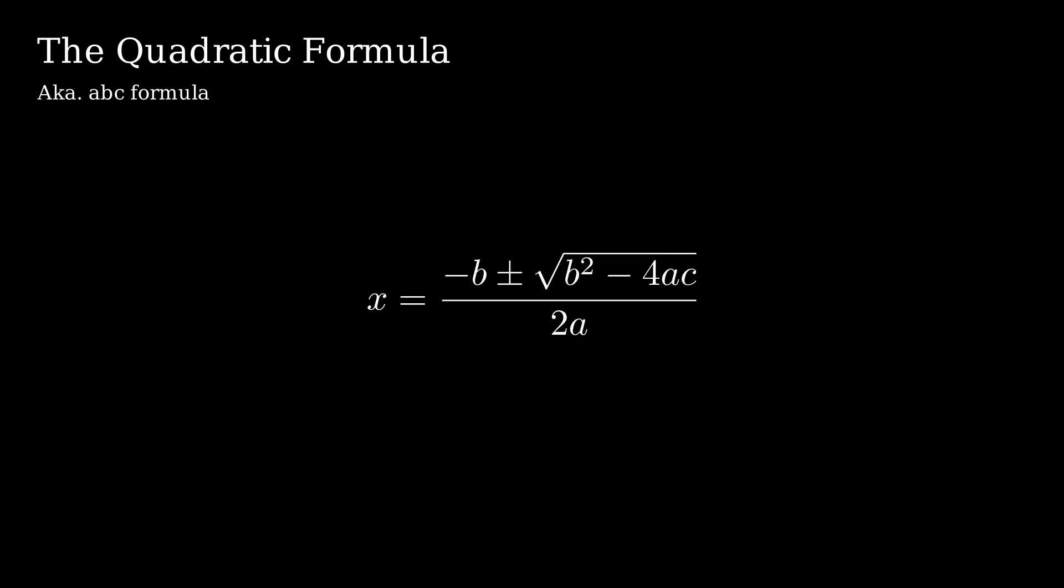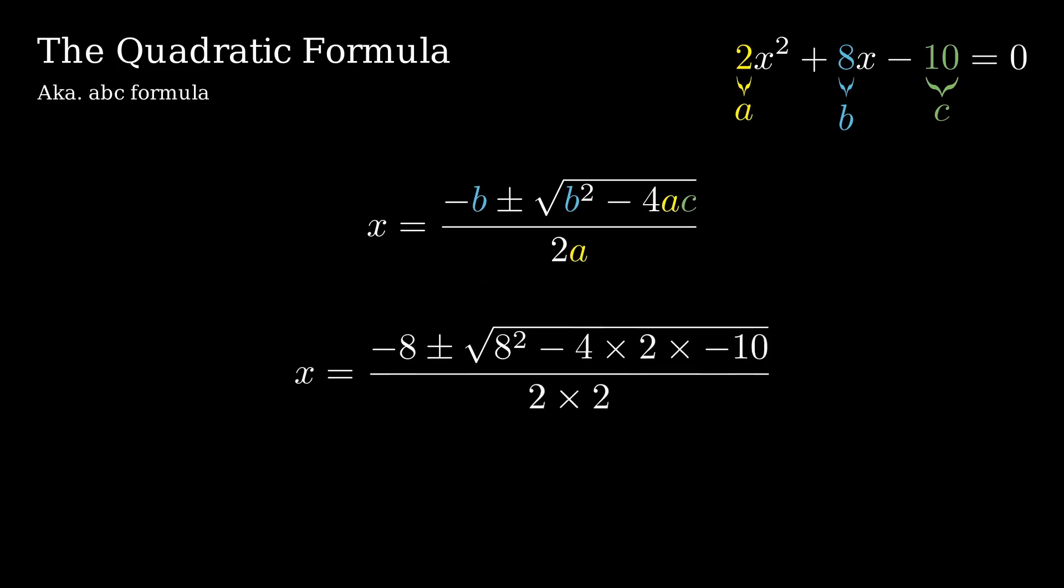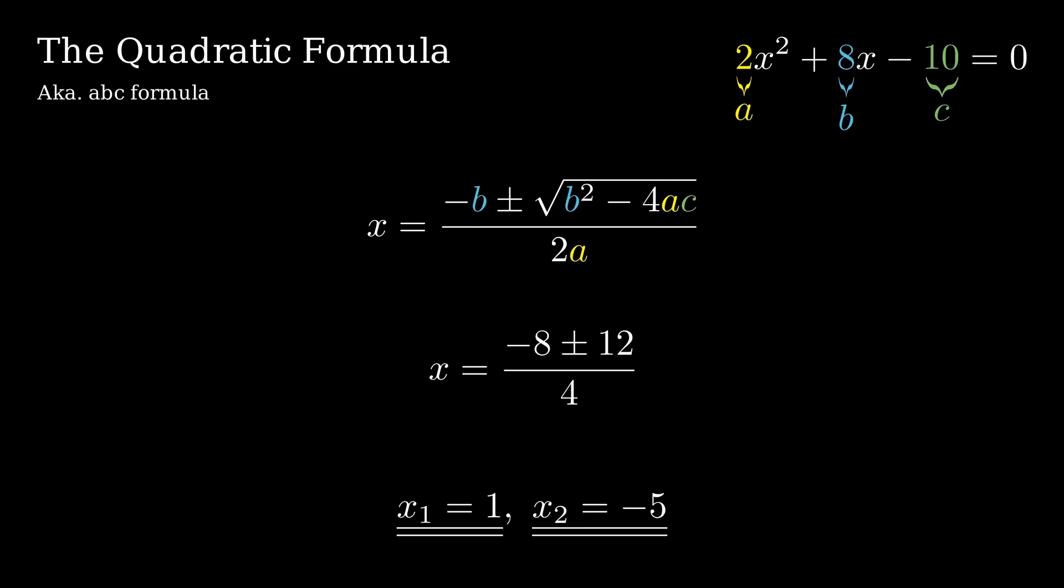The quadratic formula is probably something you have seen in school. We use it to solve second degree polynomial equations such as this one. The formula is plug and play. You just plug in ABC and solve for x. In this case x is equal to 1 and negative 5. Pretty simple. But how do we get this formula and how would we go about solving the same equation without the formula?